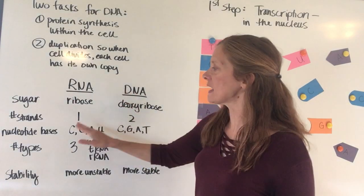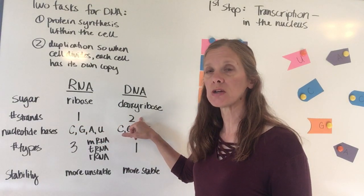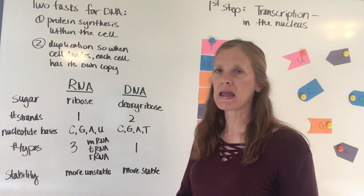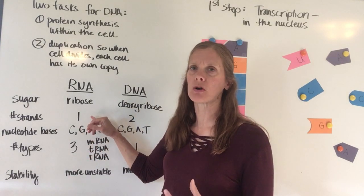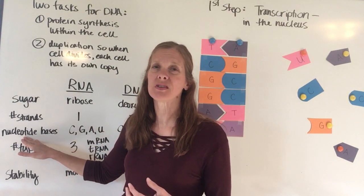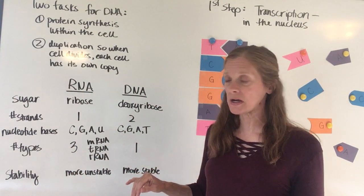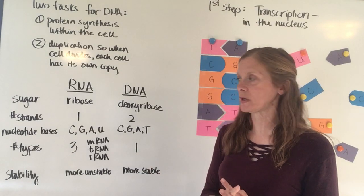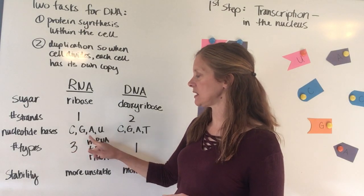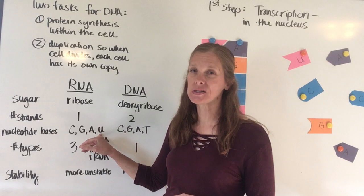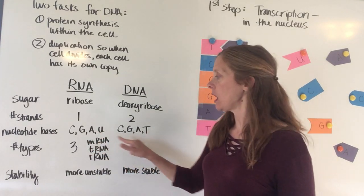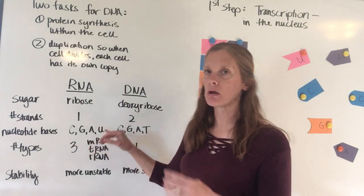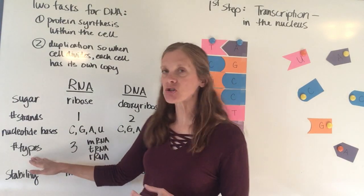RNA is made up of only one strand, while DNA is made up of two strands twisted together into a double helix. There are also differences in nucleotide bases: DNA uses cytosine, guanine, adenine, and thymine. In RNA, cytosine, guanine, and adenine are still present, but in place of thymine there is uracil. Just as thymine pairs with adenine, uracil also pairs with adenine — they are very similar, just found in different molecules.